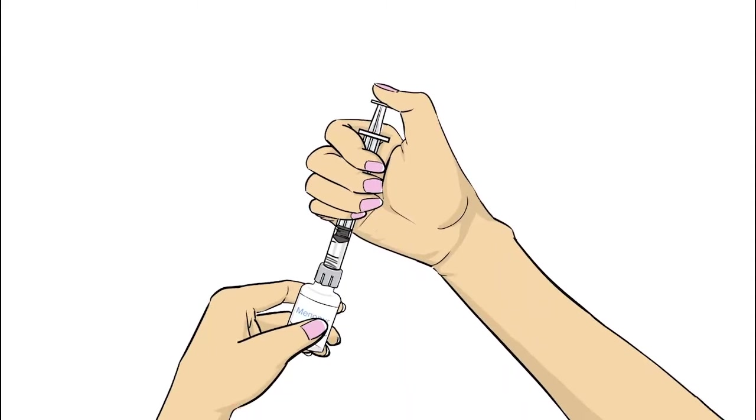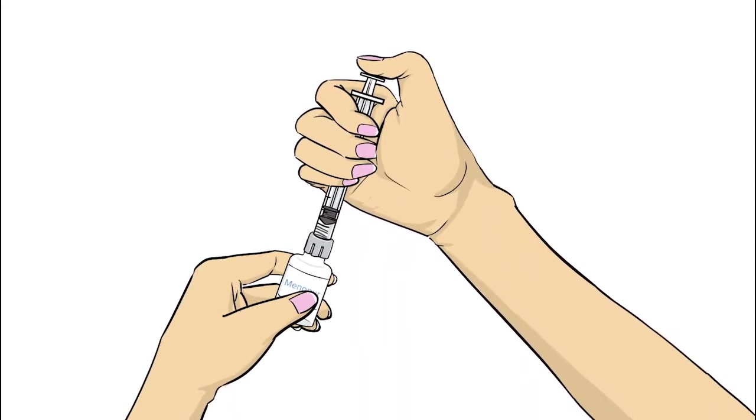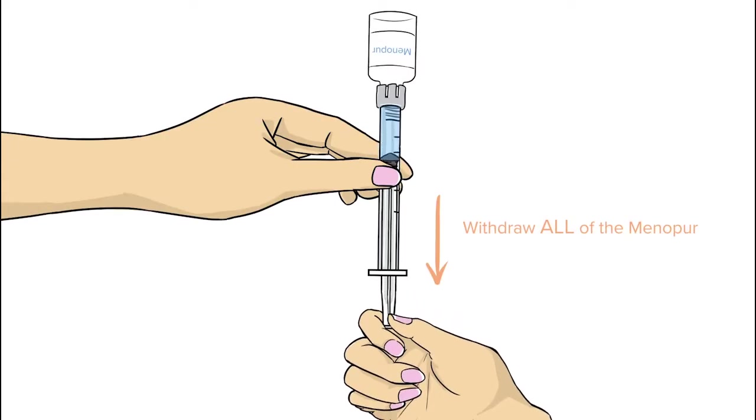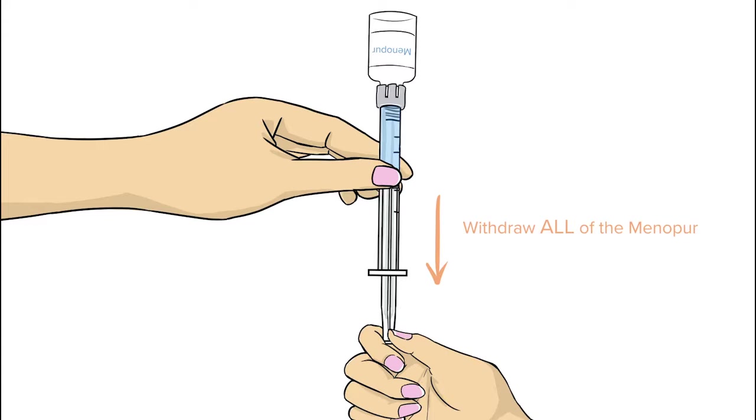Once the powder has dissolved, push all the way down on the plunger to remove any remaining air from the syringe. While holding the Menopur vial upside down, withdraw all of the Menopur into the syringe.